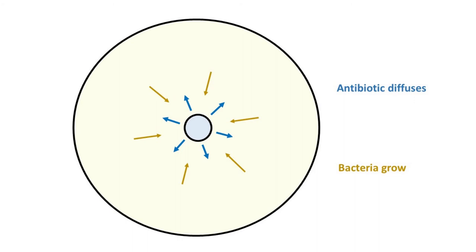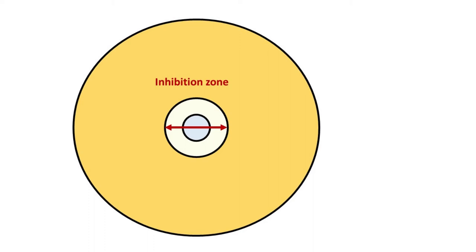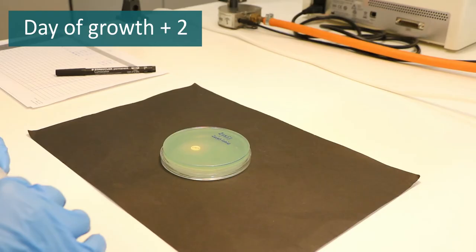If the strain is susceptible for the antibiotic in the disc, it will not be able to grow close to the disc. In that case, you can see an area without growth around the antibiotic disc. This is called an inhibition zone.